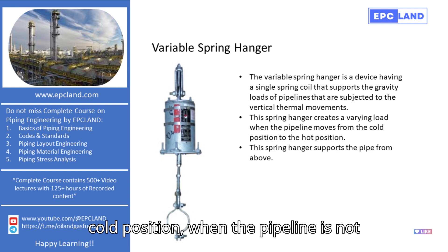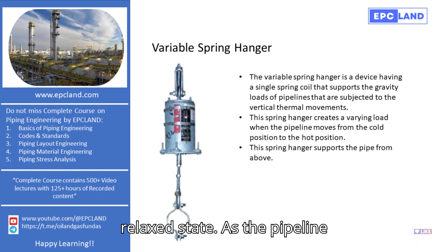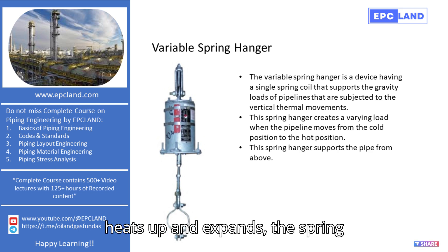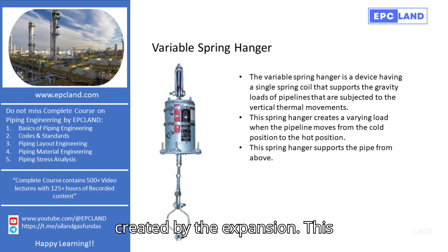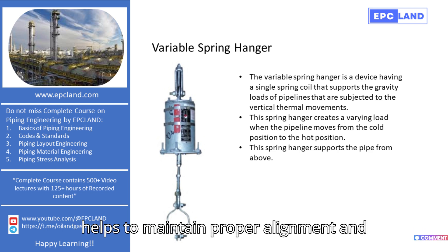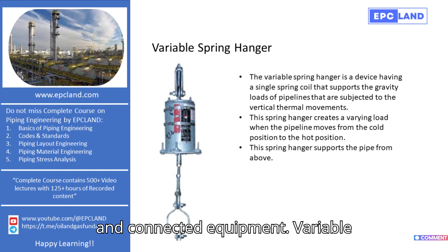This adjustment happens because the spring coil in the hanger is designed to compress or extend as needed. In the cold position, when the pipeline is not yet heated, the spring is in a more relaxed state. As the pipeline heats up and expands, the spring compresses to support the additional load created by the expansion. This helps to maintain proper alignment and prevent excessive stress on the pipeline and connected equipment.